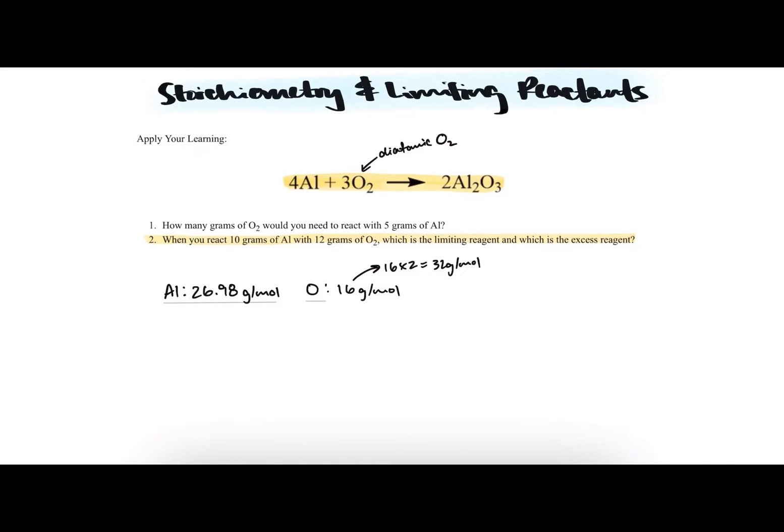Hi everyone, in this video I'll be going over question number two from the stoichiometry and limiting reactants unit. When you react 10 grams of aluminum with 12 grams of oxygen, which is the limiting reagent and which is the excess reagent?